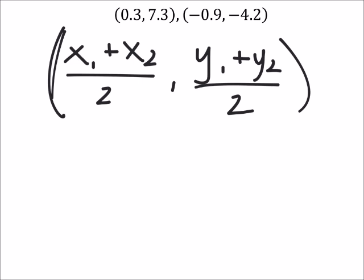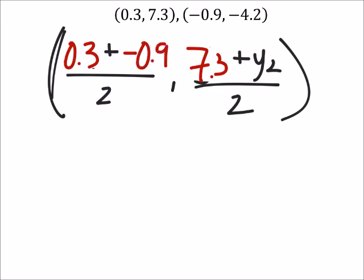I'm going to replace x1 with 0.3 and also y1 with 7.3, and then I'll go in and replace x2 with negative 0.9 and y2 with negative 4.2.